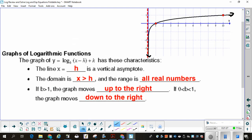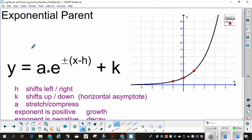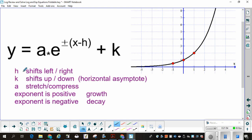If b is greater than 1, the graph moves up left to right. If 0 is less than b less than 1, the graph moves down left to right. It basically has a reflection. Exponential parent function, using e as our base. h goes left to right. k moves up down. a stretches and compresses. If the exponent is positive, then it goes up left to right. If the exponent is negative, then it would go down left to right. It would be called decay.